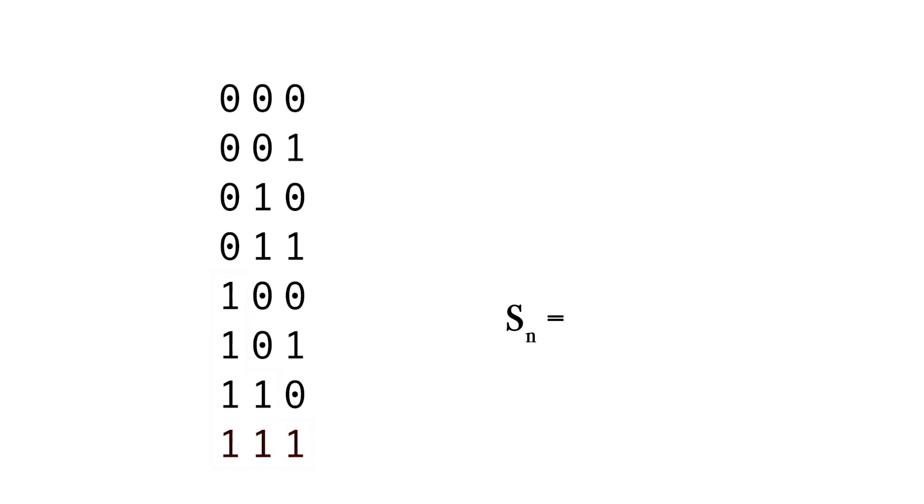Even here we can see the consistent pattern which gives us a clue for a solution. The second half of the sequences begins with 1. We have 2 to the power of n-1 of them. The quarter of them begins with 2 consecutive ones, which is 2 to the power of n-2.